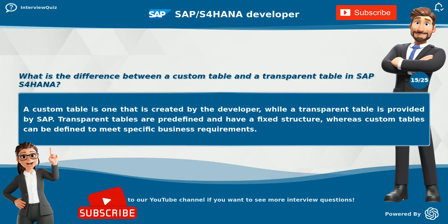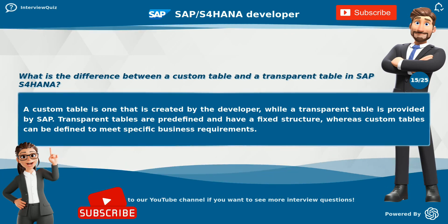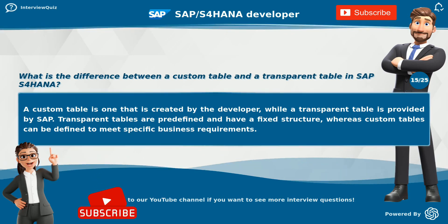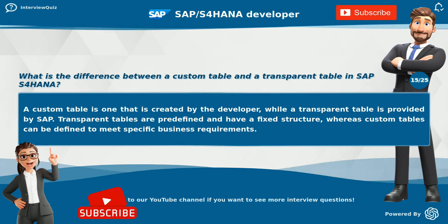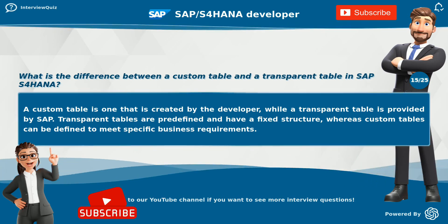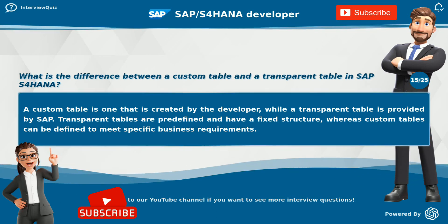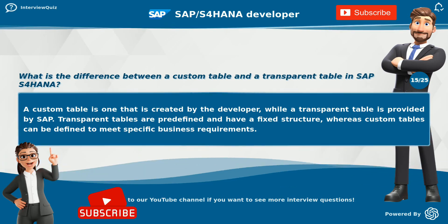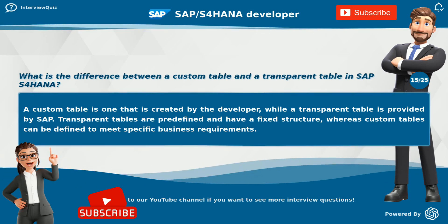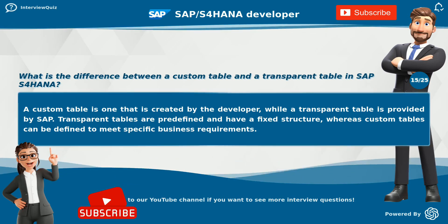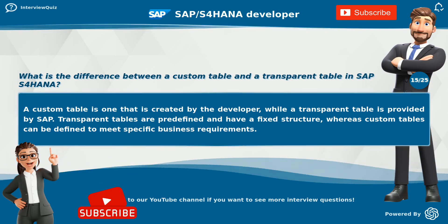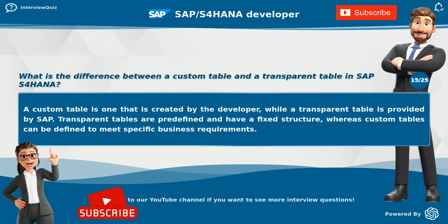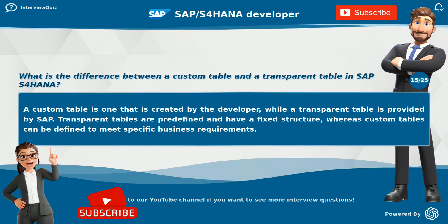What is the difference between a custom table and a transparent table in SAP S4 HANA? A custom table is one that is created by the developer, while a transparent table is provided by SAP. Transparent tables are predefined and have a fixed structure, whereas custom tables can be defined to meet specific business requirements.